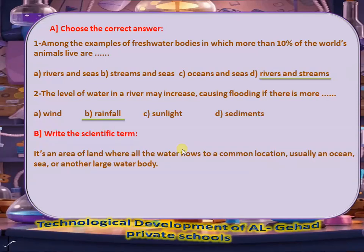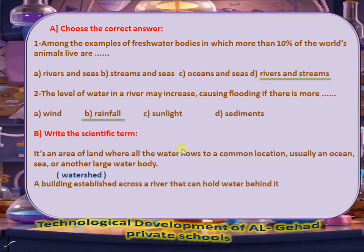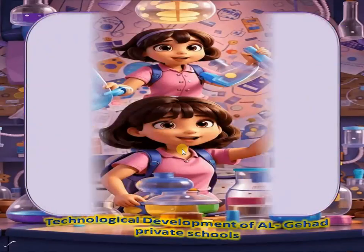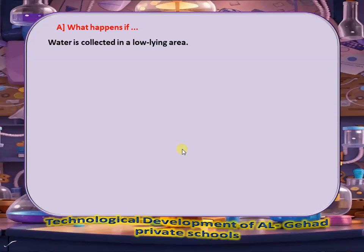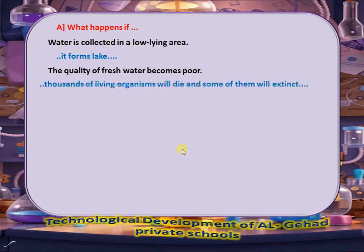3. It's an area of land where all the water flows to a common location, usually an ocean, sea, or another large water body — Watershed. 4. A building established across a river that can hold water behind it — Dam. 5. What happens if water is collected in a low-lying area? It forms a lake. The quality of fresh water becomes poor, and thousands of living organisms will die and some will go extinct.